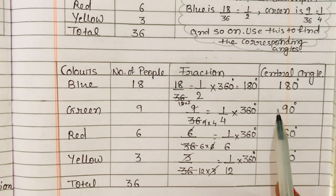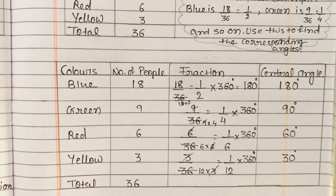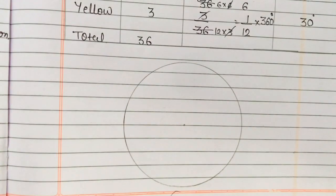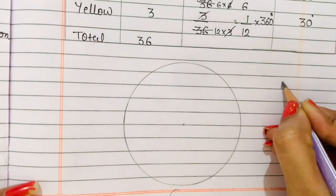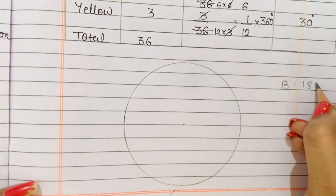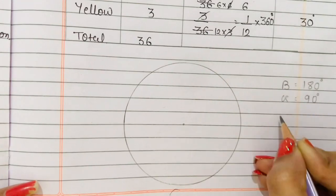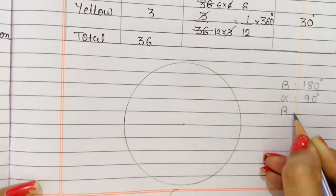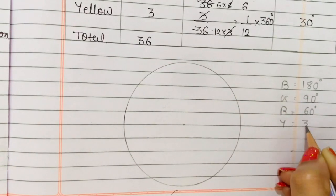So now we have the central angles: blue is 180 degrees, green is 90 degrees, red is 60 degrees, and yellow is 30 degrees. Now we draw the pie chart. For the pie chart, we will write the angles roughly — blue has 180°, green has 90°, red has 60°, and yellow has 30°.